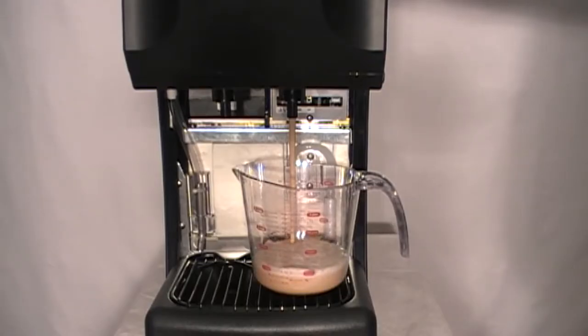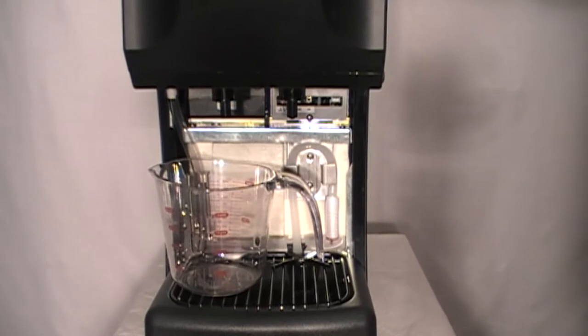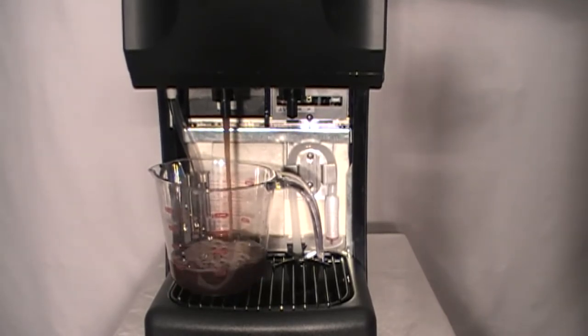To initially get the concentrate to fully mix with the water, first pull the left dispense tap handle and pour 16 ounces of product. Then open the right dispense tap handle and pour 8 ounces of product to prime with nitrogen.